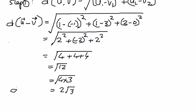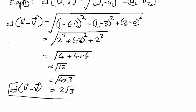Therefore the distance between vector u and vector v is 2 square root of 3 units. This is the way we solve these types of problems. In my next presentation, we shall look at some more examples related to vectors.